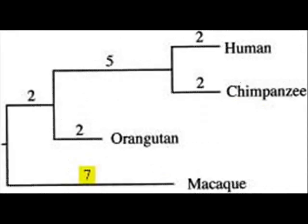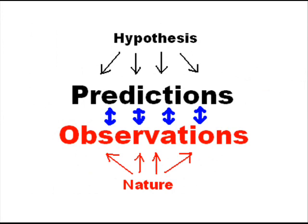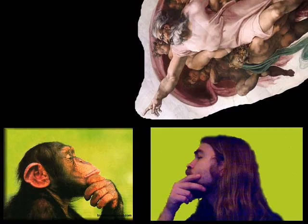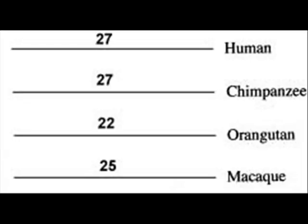Now that we have the data, let's compare the data with our predictions. Prediction one is that we will see an independent set of mutations in each kind when compared to the functional rat version. Thus, we have 27 mutations leading to the human gene, 27 leading to chimps, 22 to orangutan, and 25 for macaque for a total of 101 mutations.